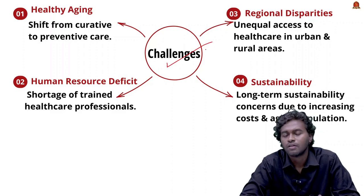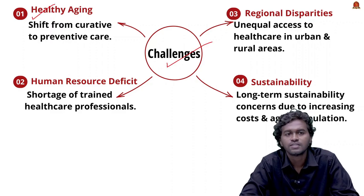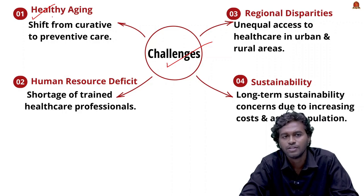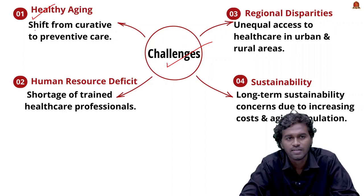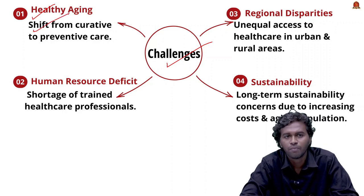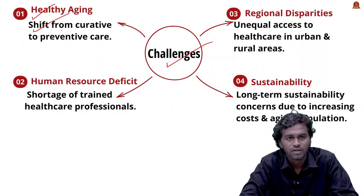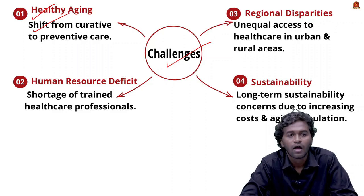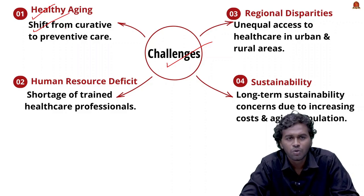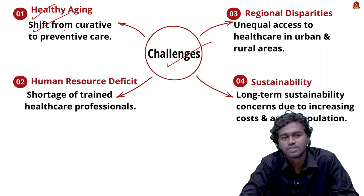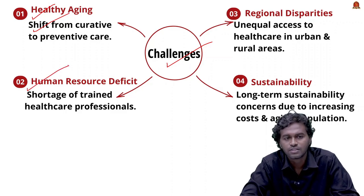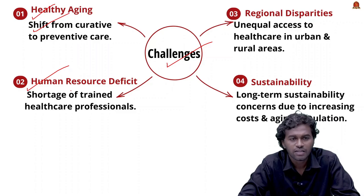The challenges faced by PM-JAY: the first is healthy aging. Ensuring healthy aging requires a shift from curative to preventive care. It is essential to address issues like increasing rates of non-communicable diseases and other old-age conditions; without this, hospitalization and advanced care will be strained.